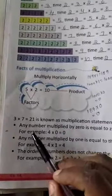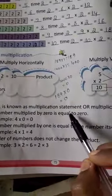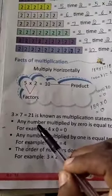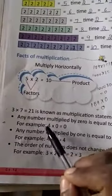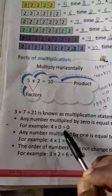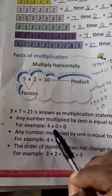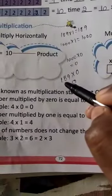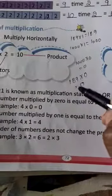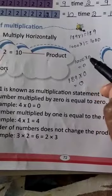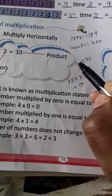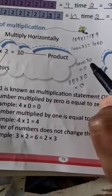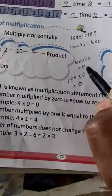First property: any number multiplied by 0 is equal to 0. When we multiply any number by 0, the answer is equal to 0. For example, 4 into 0 is equal to 0.